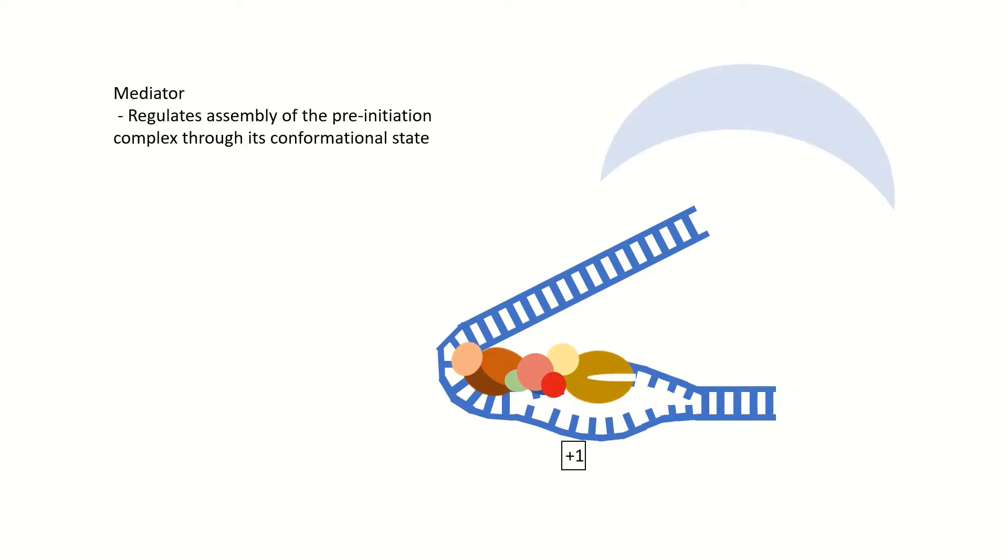Once this complex is formed, the mediator complex binds unphosphorylated RNAP2 and regulates the assembly of the pre-initiation complex through its conformational state. This complex is made up of many subunits and is very large, meaning it can transduce regulatory information from proximal or distal long-range elements through protein-protein interactions with transcription factors that are bound to those elements.